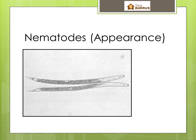Nematodes have no connective tissues, or at least very little. Look at an earthworm cross-section, and you will see that there are connective tissues all over the place holding the thing together. You look at a nematode cross-section, and you'll see that most of the body is just this liquid gel-like stuff. There are no connective tissues at all.